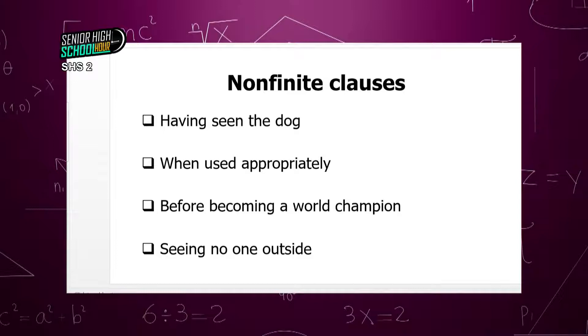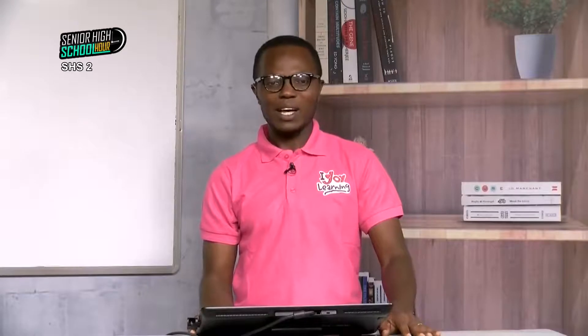That settles it — clauses can be grouped into finite and non-finite. To identify a finite clause, I must confirm that the clause has either the present form or the past form of the verb. If it is non-finite, then it has the ING participle or the EN participle.